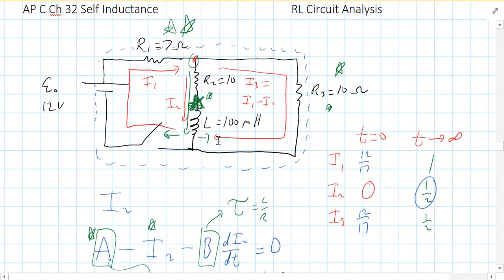We're going to say after that switch has been closed a long time and this circuit's reached a steady state, we know that these are our currents. The current through R2 and L is going to be half an amp. The current through R3 is half an amp. Therefore, the total current going through the battery is one amp.